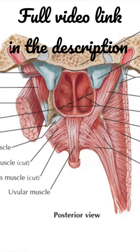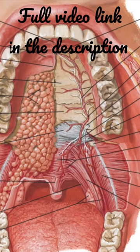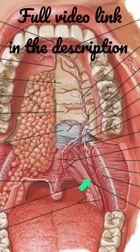Then you have the musculus uvulae, the palatopharyngeus muscle, and finally the palatoglossus muscle. In this picture you can see the palatoglossus muscle.